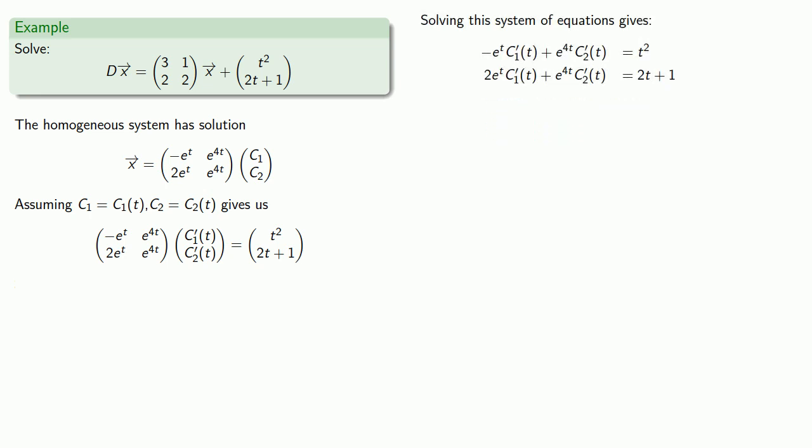Here, we might notice that we have an e to the 4t, C2 prime of t in both equations, so if we multiply the first equation by minus 1 and add, then solve for C1 prime.